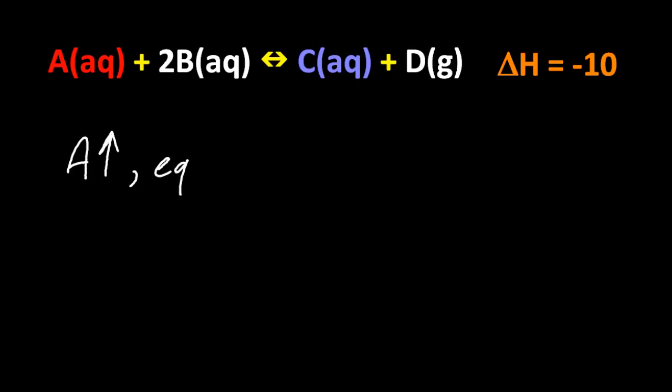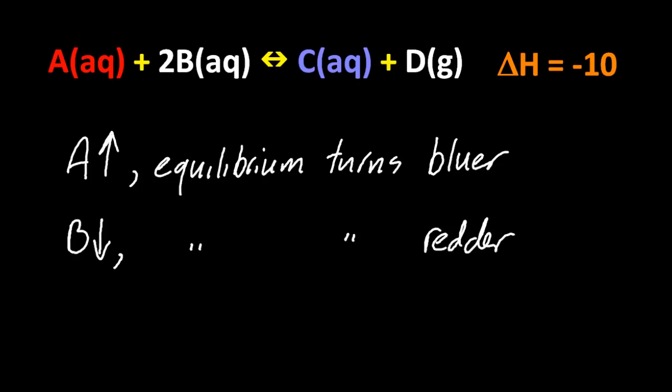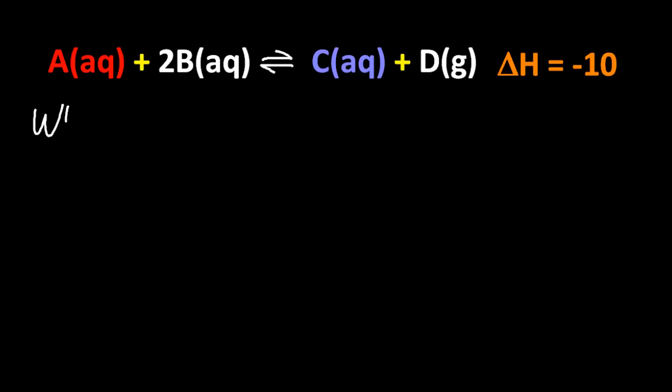So this is weird if you've never seen this before. If I increase the concentration of the red A, it turns blue. Well, that's strange. I add red A, it goes bluer. If I remove the colorless B, it turns redder. And if I add the blue C, it turns redder. That seems to make no sense at all. You add red stuff, it turns blue. And this is the genius of Le Chatelier, because he worked this out.